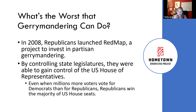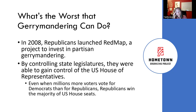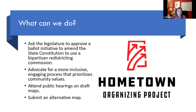The Center for American Progress published a report estimating 59 seats in the U.S. House of Representatives that would have otherwise gone a different direction. 59 seats is enough to swing Congress. That was in 2012, 2014, and 2016 — 59 politicians who would otherwise not have been elected but were able to win anyway because of partisan gerrymandering. It's serious business with serious consequences.